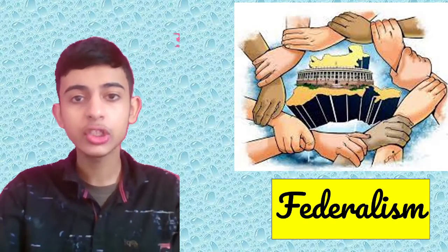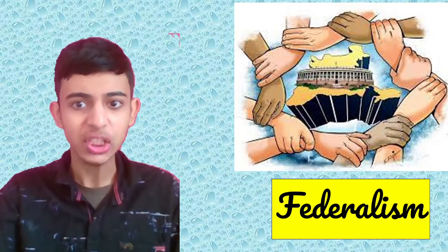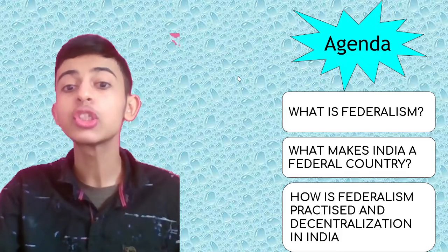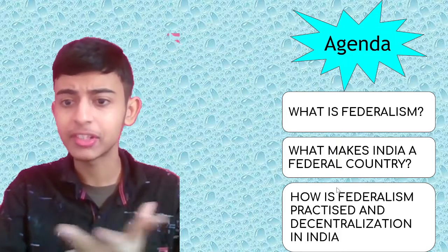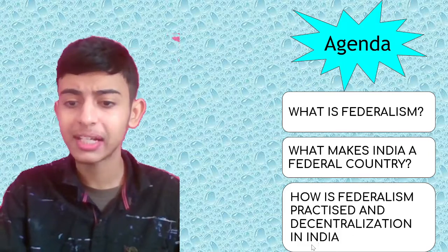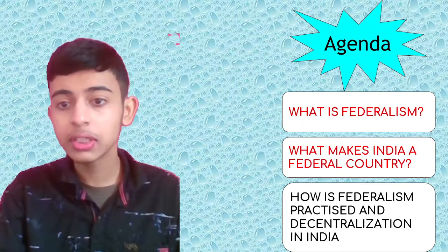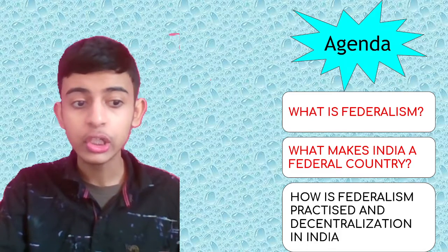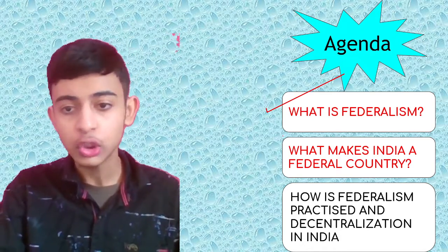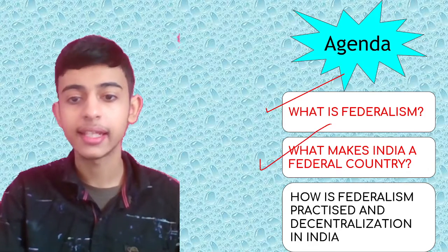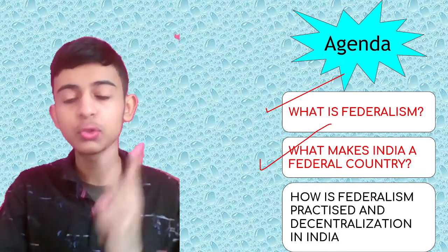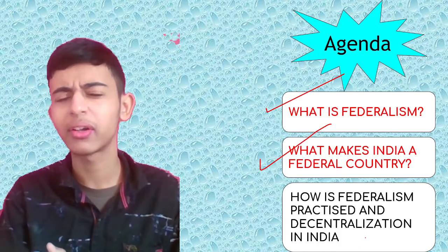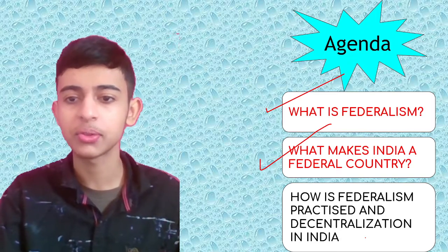This is the chapter of Federalism, which is an easy chapter. Let's see the agenda. The topics are: What is Federalism? What makes India a Federal country? And how Federalism is practiced, and decentralization. Today we will be finishing up two topics — topic number one: What is Federalism?, and topic number two: What makes India a Federal country? The remaining topics will be covered in the next session, delivered around two to three days from now.